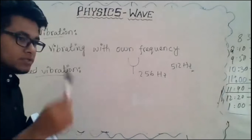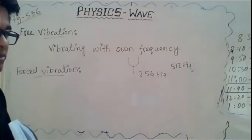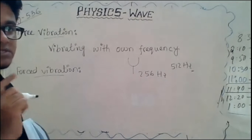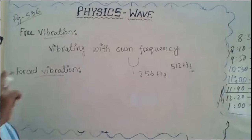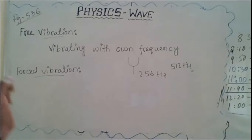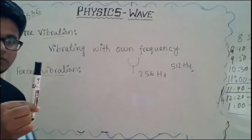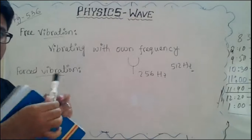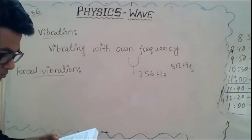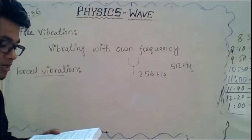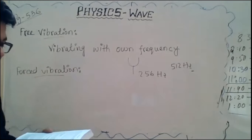When you hit a tuning fork, it will start vibrating and it will vibrate at the frequency written on it — 256 Hertz means it completes 256 vibrations in one second. This is what frequency is: the number of vibrations completed in one second. Every body or object has its own frequency — not only this tuning fork, even a marker has its own frequency. When a body is disturbed by applying an external force, it will vibrate with a fixed frequency. The frequency depends on the density, shape, and elasticity of the body.